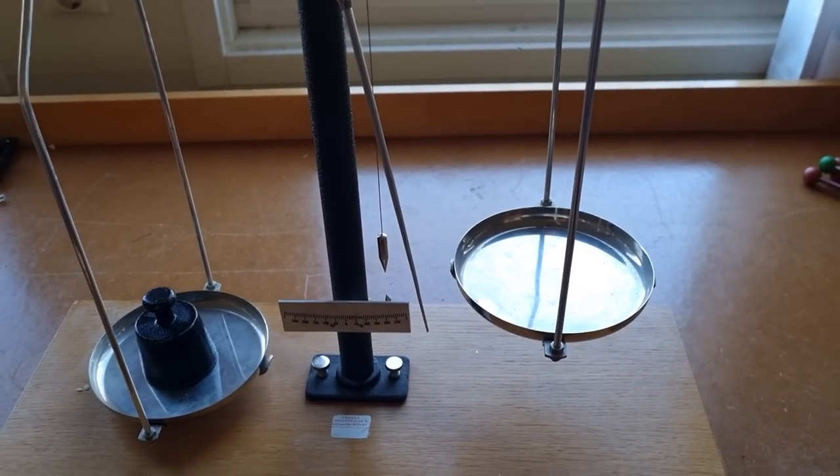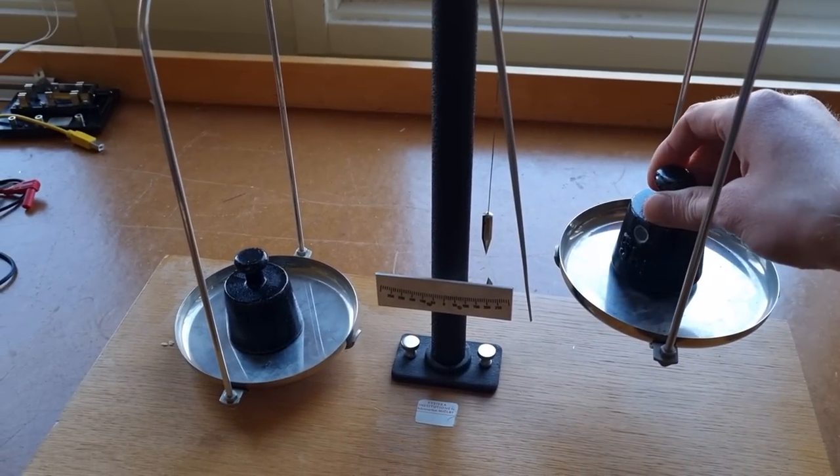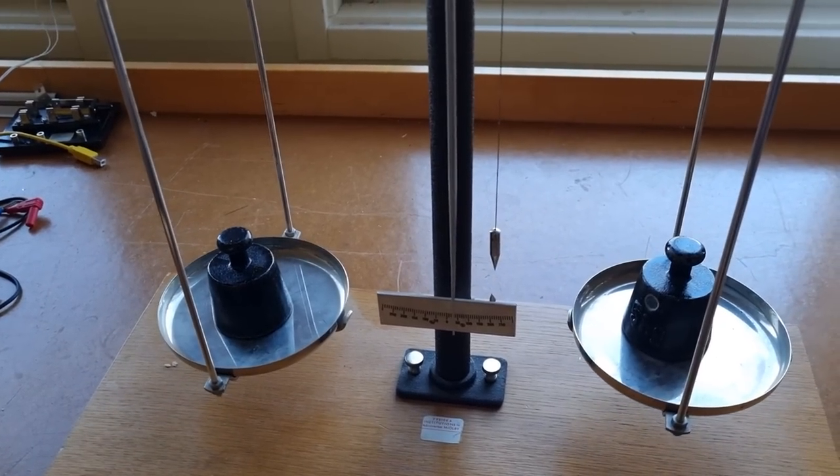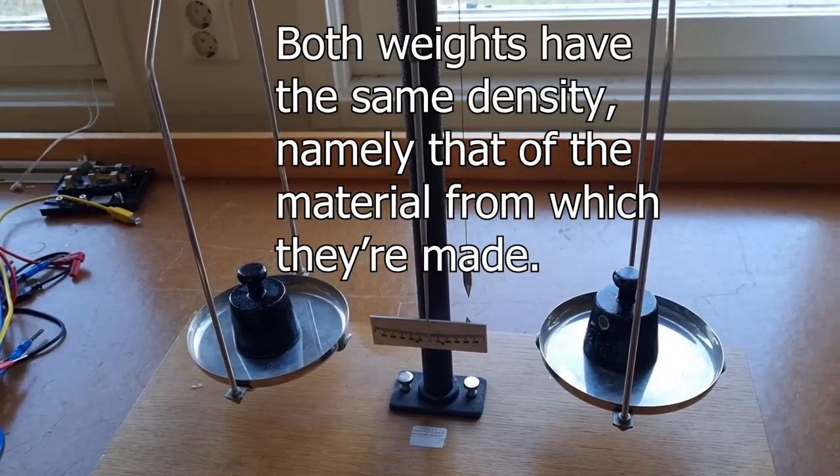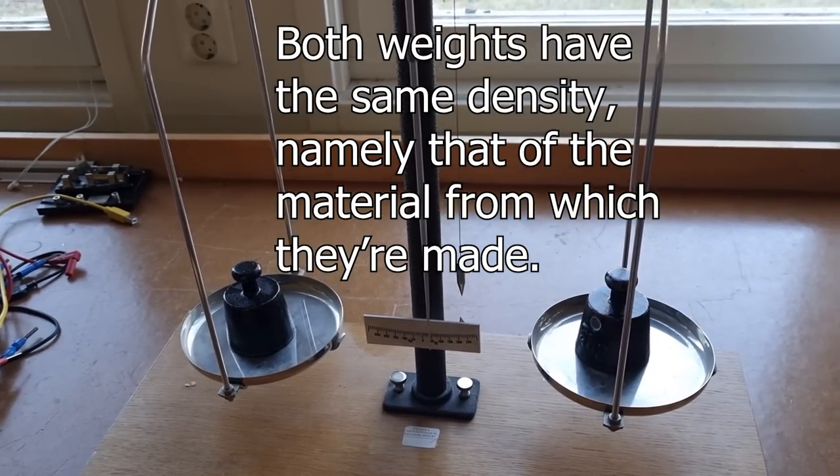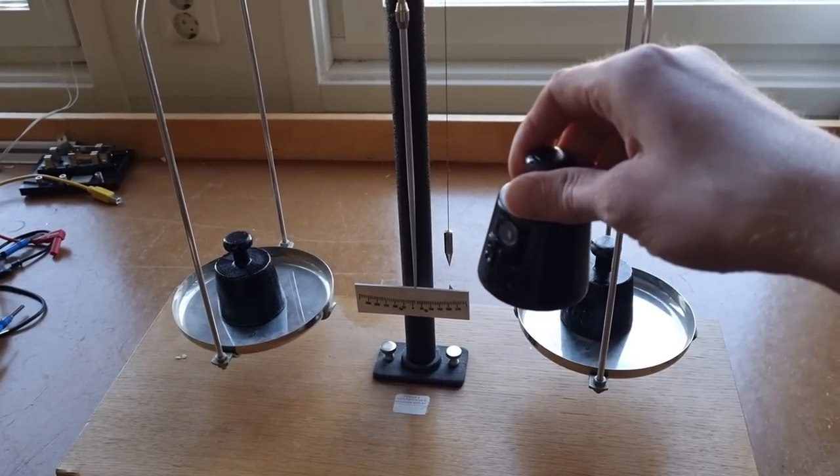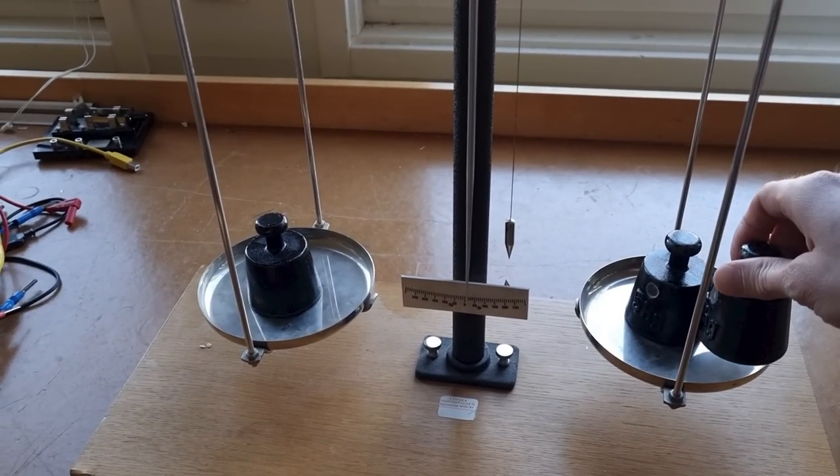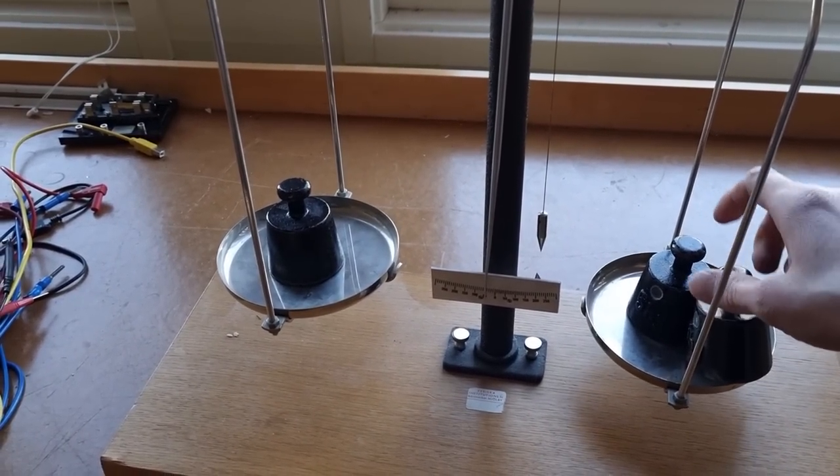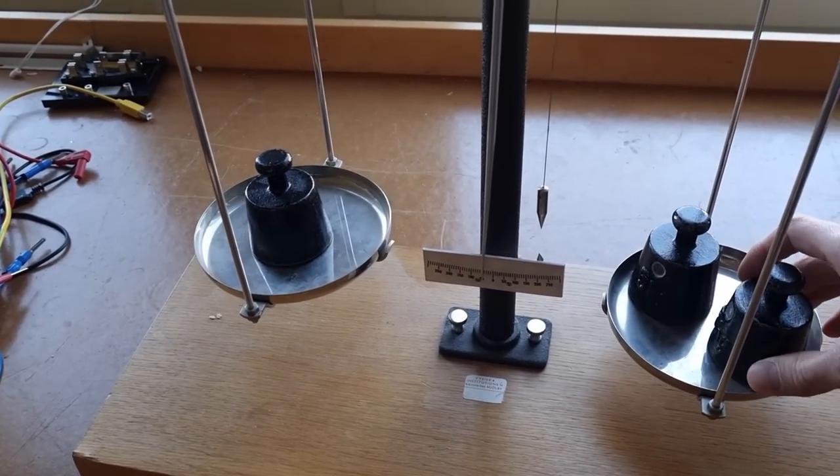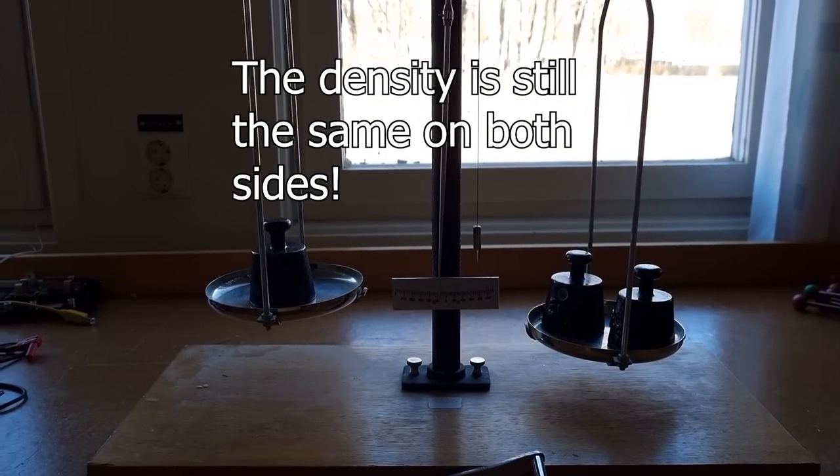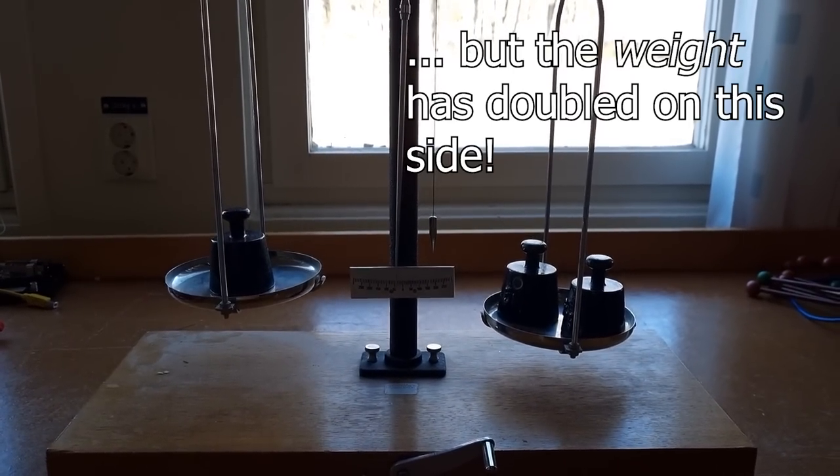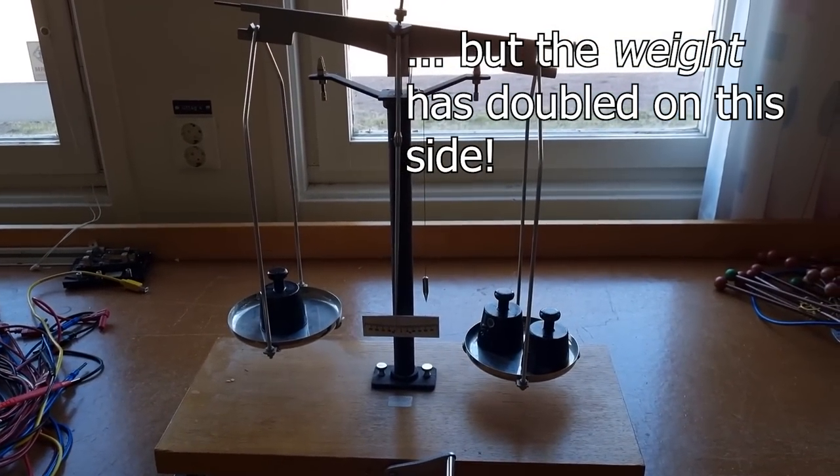Here's a simple experiment that shows a severe flaw in this model. A simple set of scales and weights. If the flurfs model is accurate and the scales being balanced shows that both weights have the same density, which they do since they are made of the same material. Checks out so far. But let's put two weights on one side. The density is still the same, so obviously the scale should be... what the hell? The density differential between the weights and the surrounding air is the same on both sides, so how the hell can this happen? I have a suggestion. The downward force is the weight of the object, which has now been doubled on one side, but not the other.